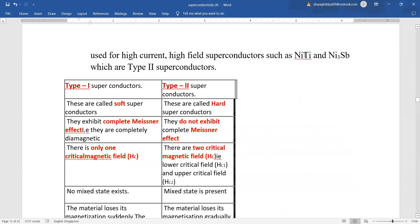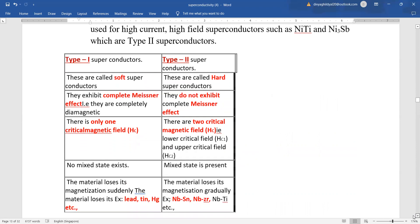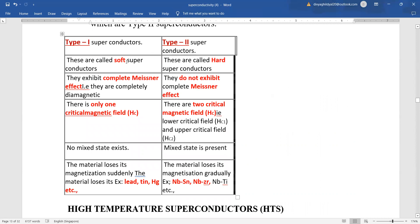So quickly, type 1 are the soft superconductors, type 2 are the hard superconductors. Type 1 show complete Meissner effect, they are completely diamagnetic. Type 2 do not exhibit complete Meissner effect. Type 1 have only one critical magnetic field but type 2 have two critical magnetic fields. No mixed state exists in type 1 superconductors but mixed state is present in type 2 superconductors. Examples of type 1 superconductors are lead, tin, mercury, single elements. Examples of type 2 superconductors are alloys or combinations like niobium-tin or niobium-zinc or niobium-titanium.